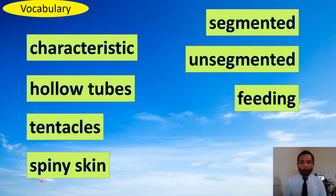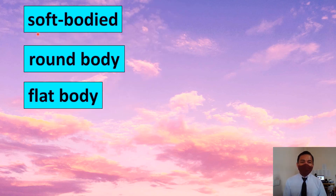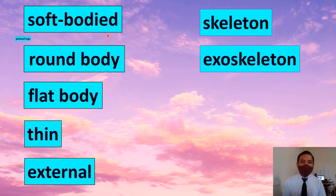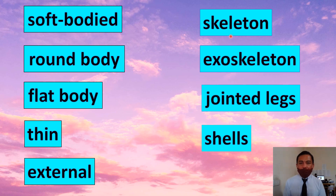Spiny skin, segmented, unsegmented, feeding, soft bodied, round body, flat body, thin, external skeleton, exoskeleton, jointed legs, shells.